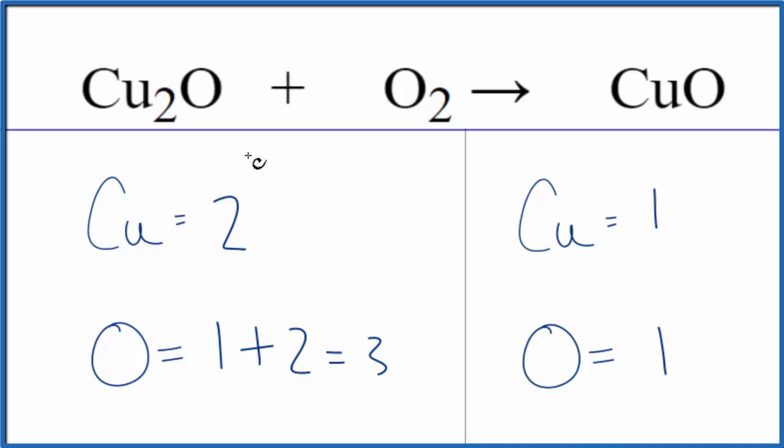So if I put a 2 as my coefficient in front of the copper 1 oxide, I'd have 2 times 2. That would give me four copper atoms. But the oxygens, I'd have 1 times 2 plus these two right here. That would give me four oxygen atoms.